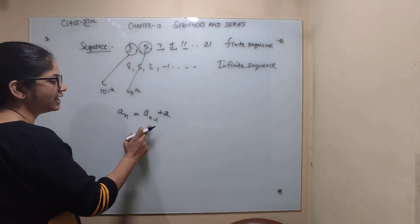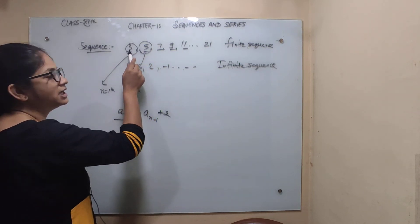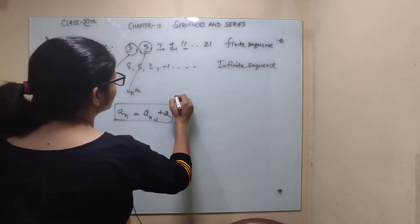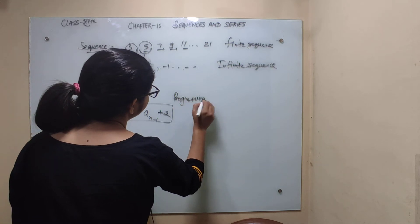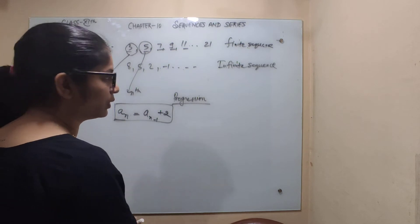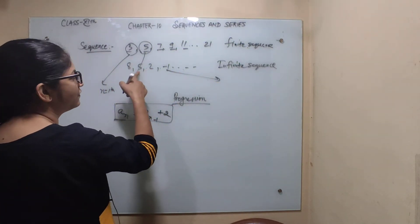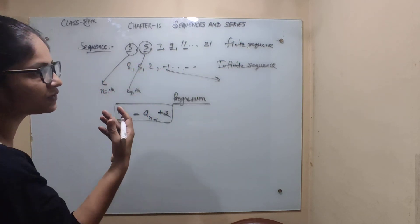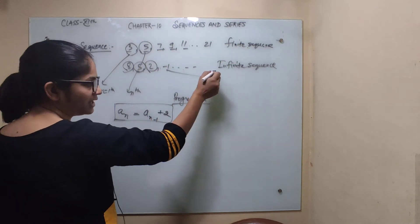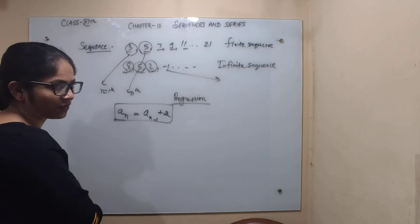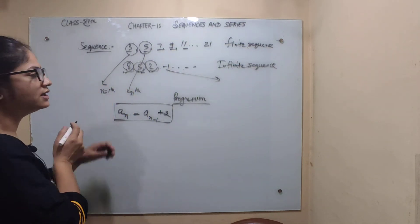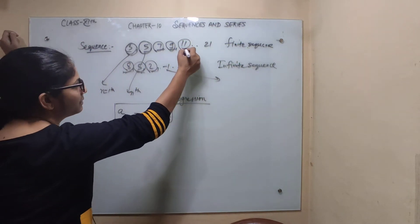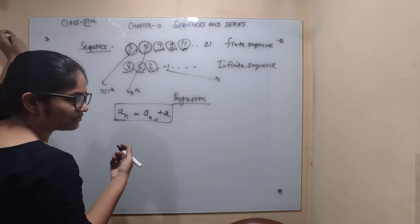So the nth term a_n equals a_{n-1} plus 2. You get the nth term by adding 2 to the previous term. If you can find terms using an explicit formula, this is called a progression. Similarly, for the sequence 8, 5, 2, -1...: subtract 3 from the previous term to get the next (8 minus 3 gives 5, 5 minus 3 gives 2). With an explicit formula you can write the terms, so this is also a progression.